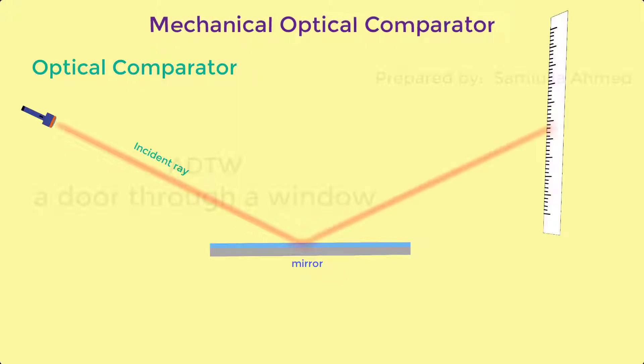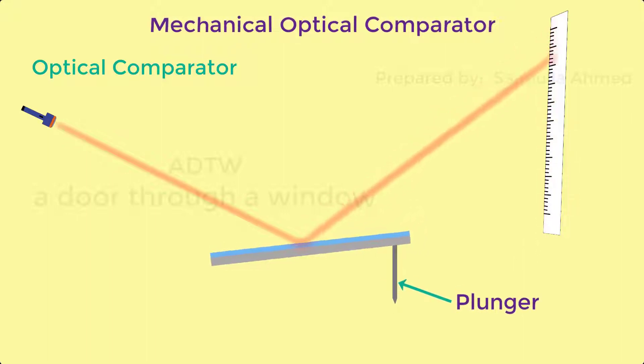This ray will be projected on the scale. If we keep the mirror horizontal and project an incident ray at an angle theta to the mirror, then it will get reflected with the same angle theta. The mirror can be tilted where the tilting of the mirror can be controlled by the measuring plunger.